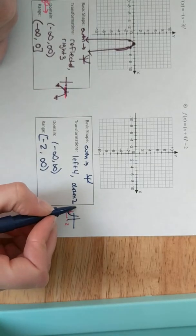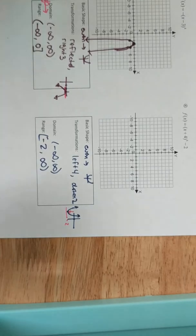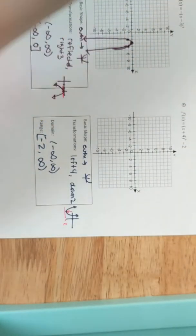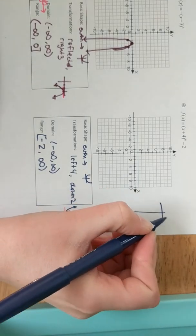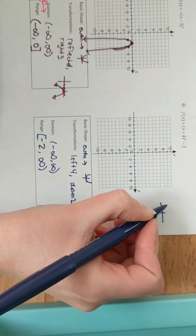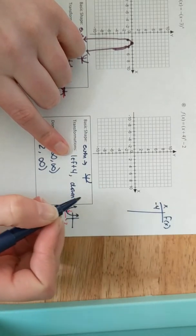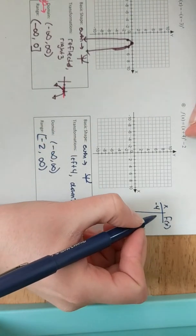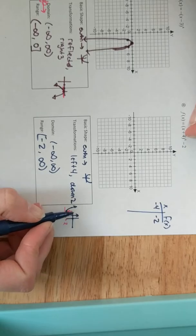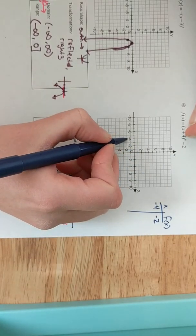Domain, always negative infinity to infinity. Range depends on your highest and lowest values. This went down 2, so it has a lowest value at negative 2. So I expect the range to be from negative 2 up to positive infinity. Those tails are going up, so infinity is the largest value. That downshift gave me a negative 2 as the smallest.